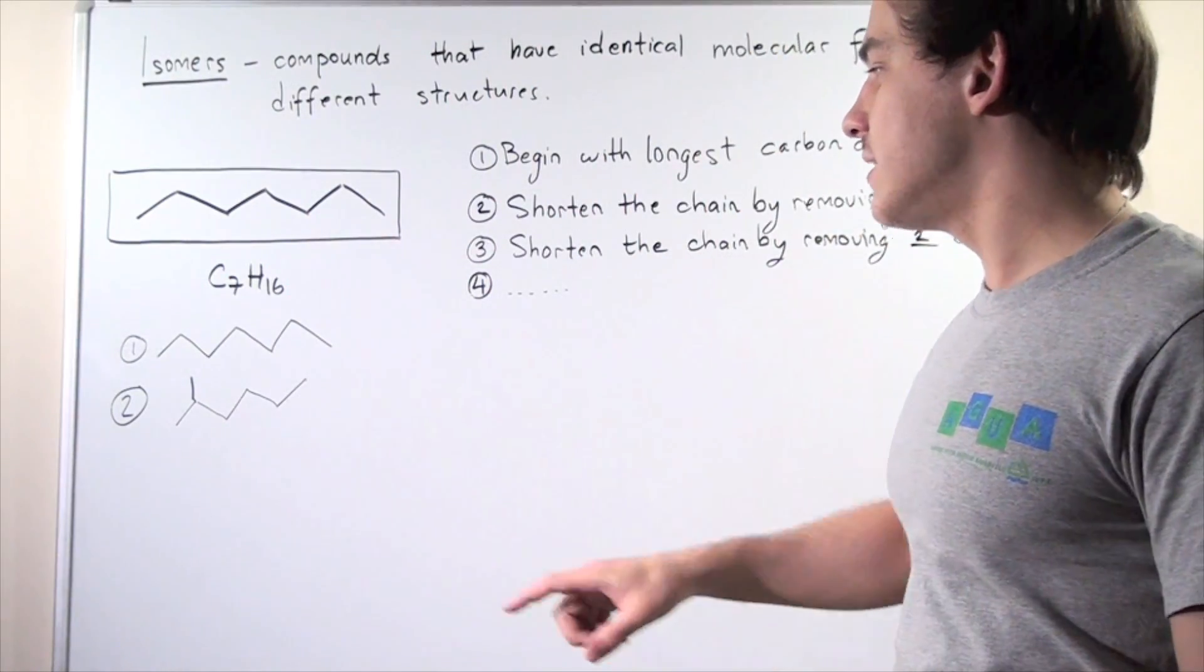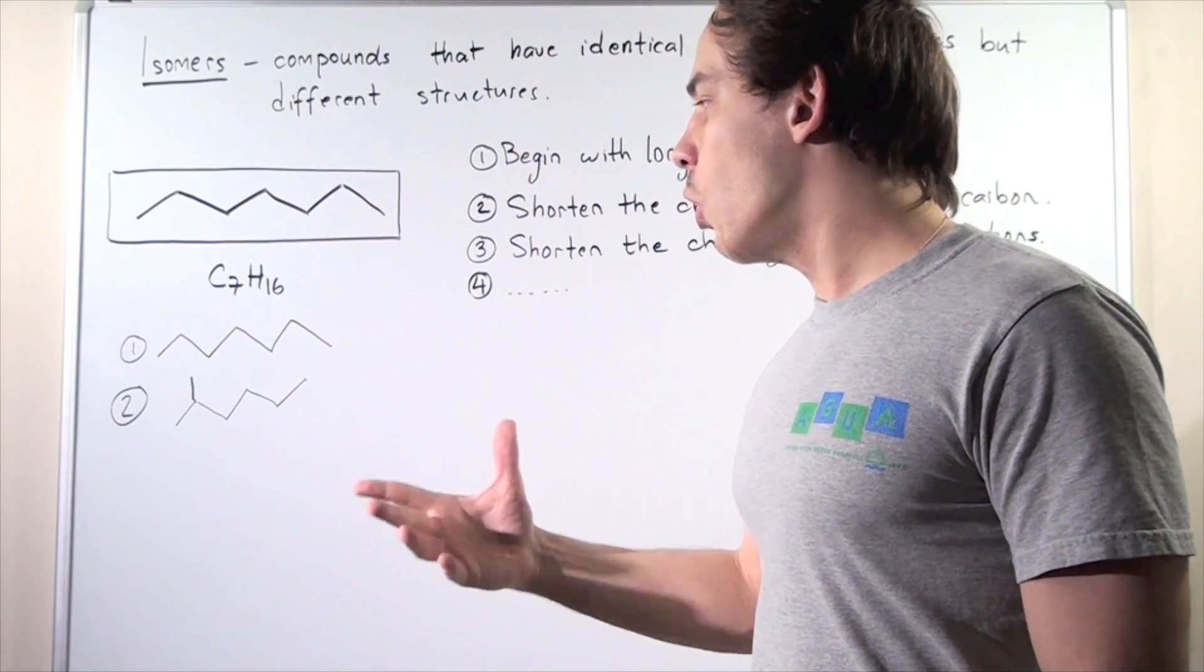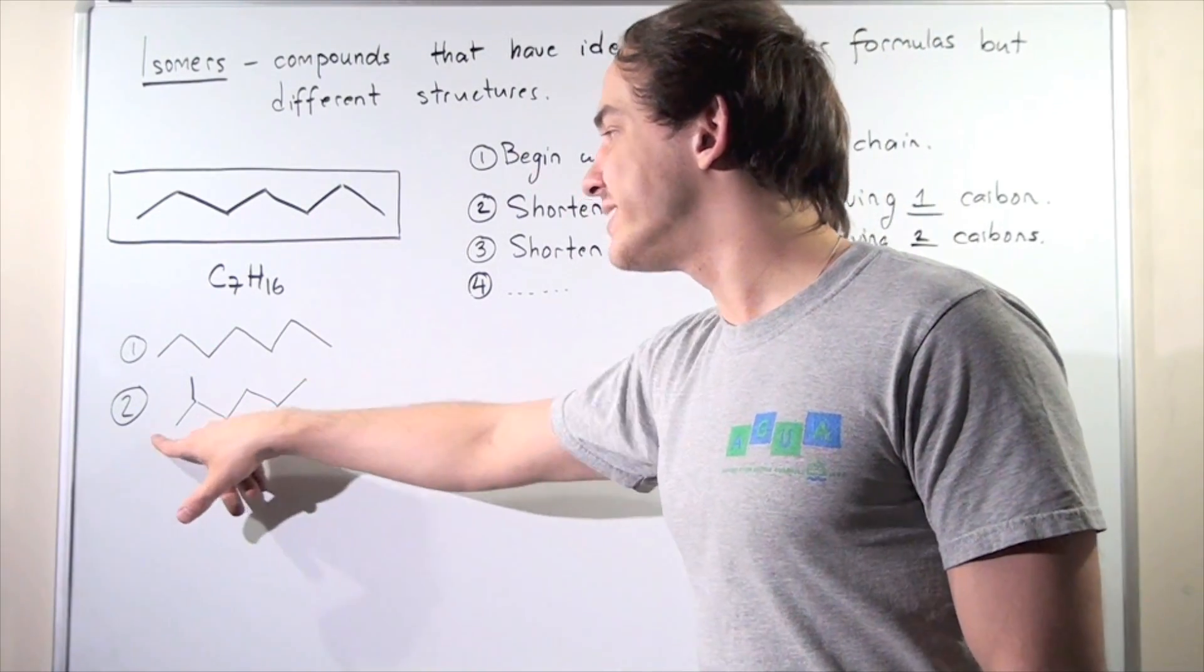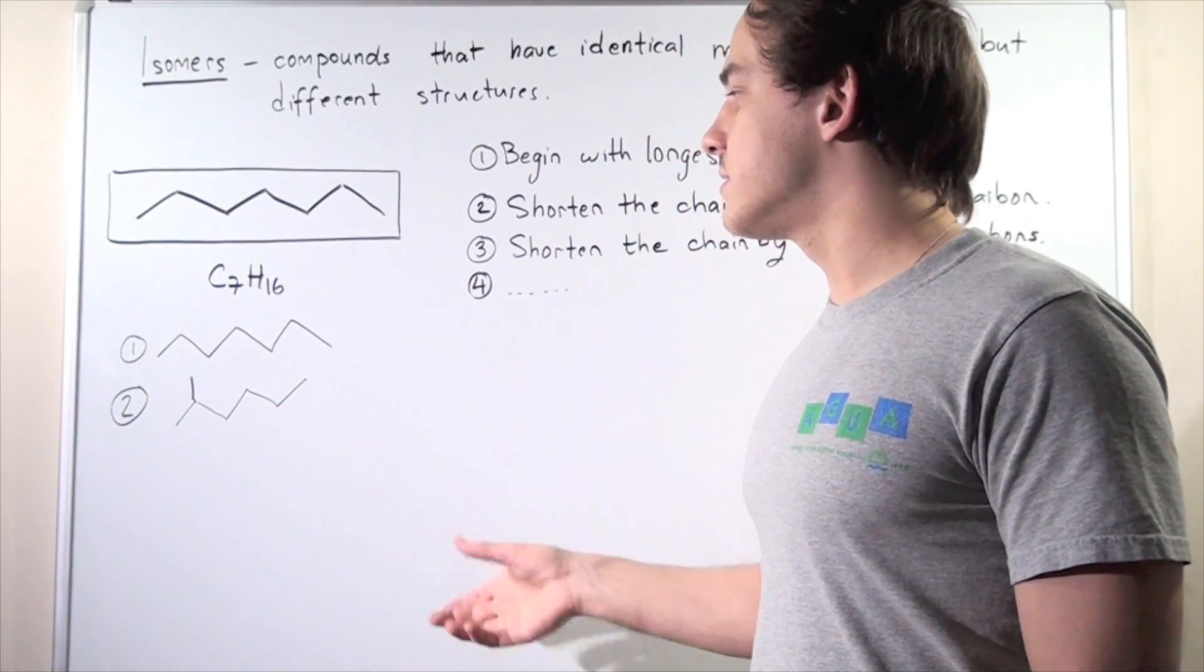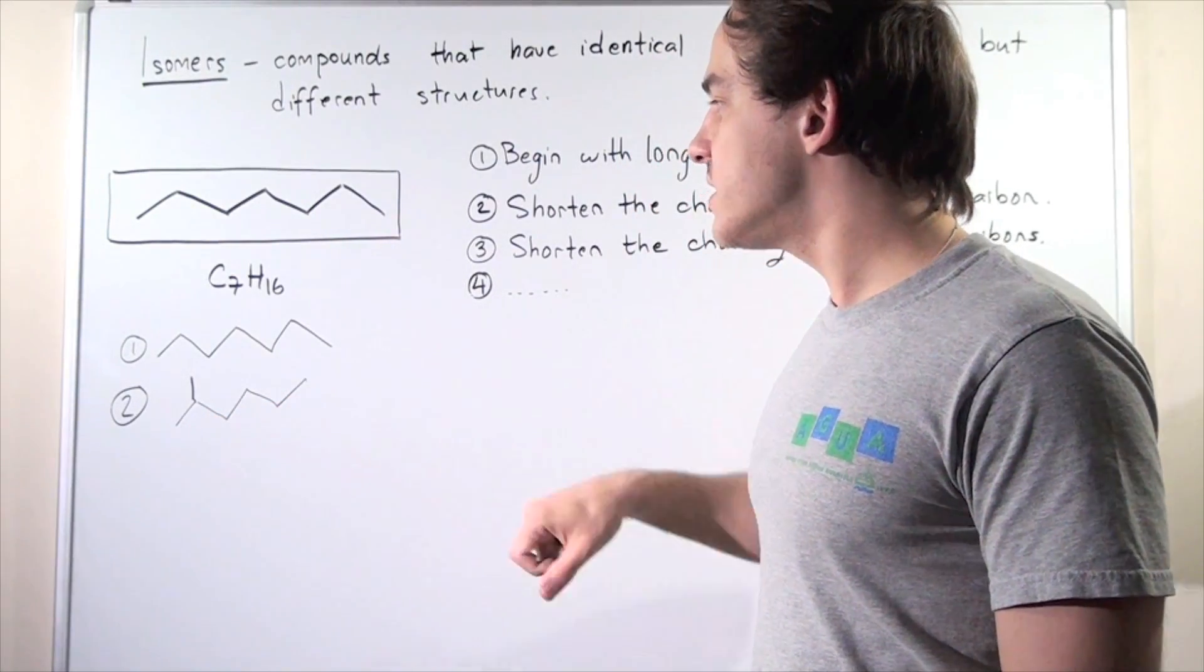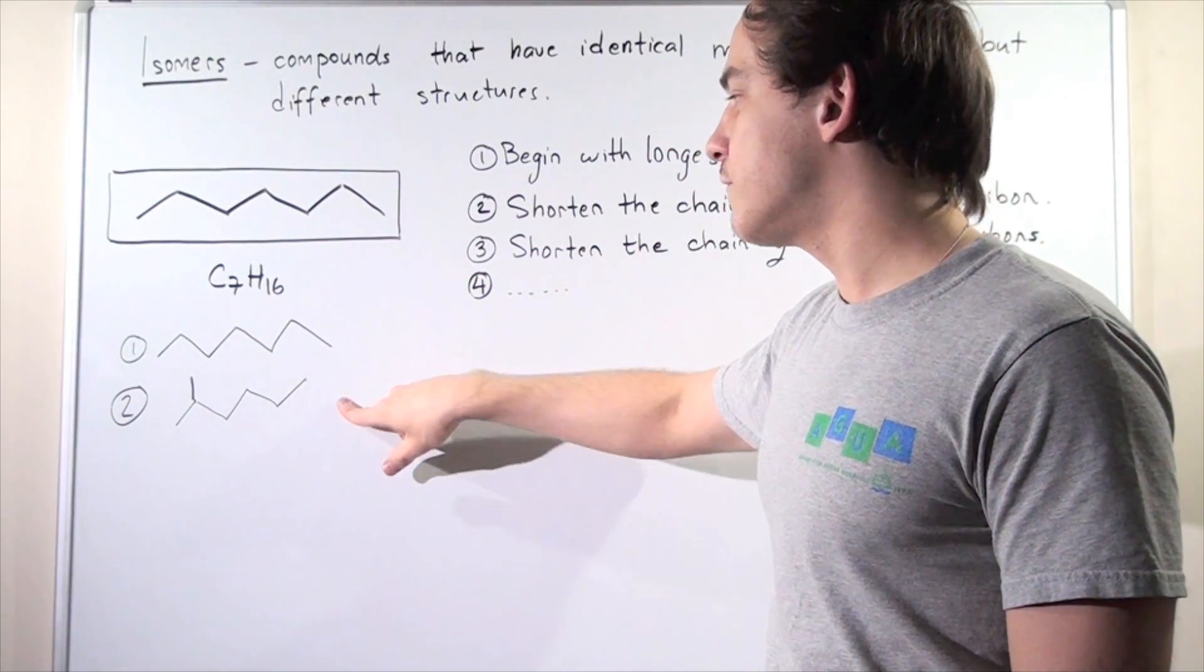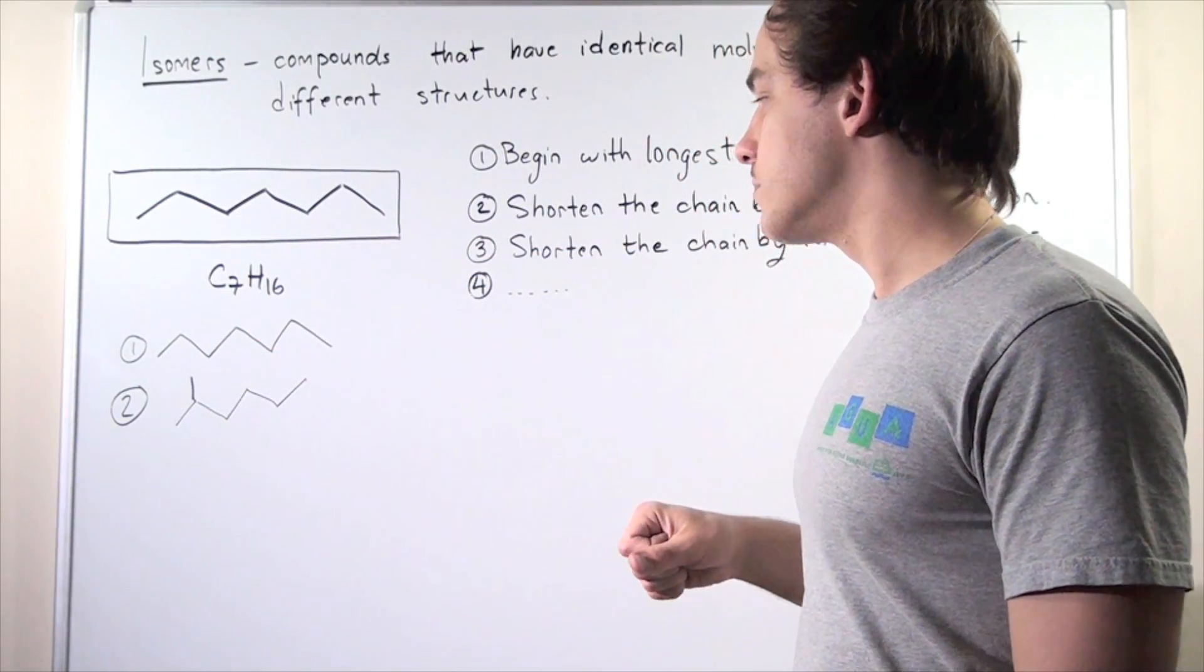Now if we place it onto this position, we get back our heptane. The goal is to develop as many structurally different compounds as possible. So here is one more isomer. Notice that these two have the same exact molecular formula, but they have different structural forms.